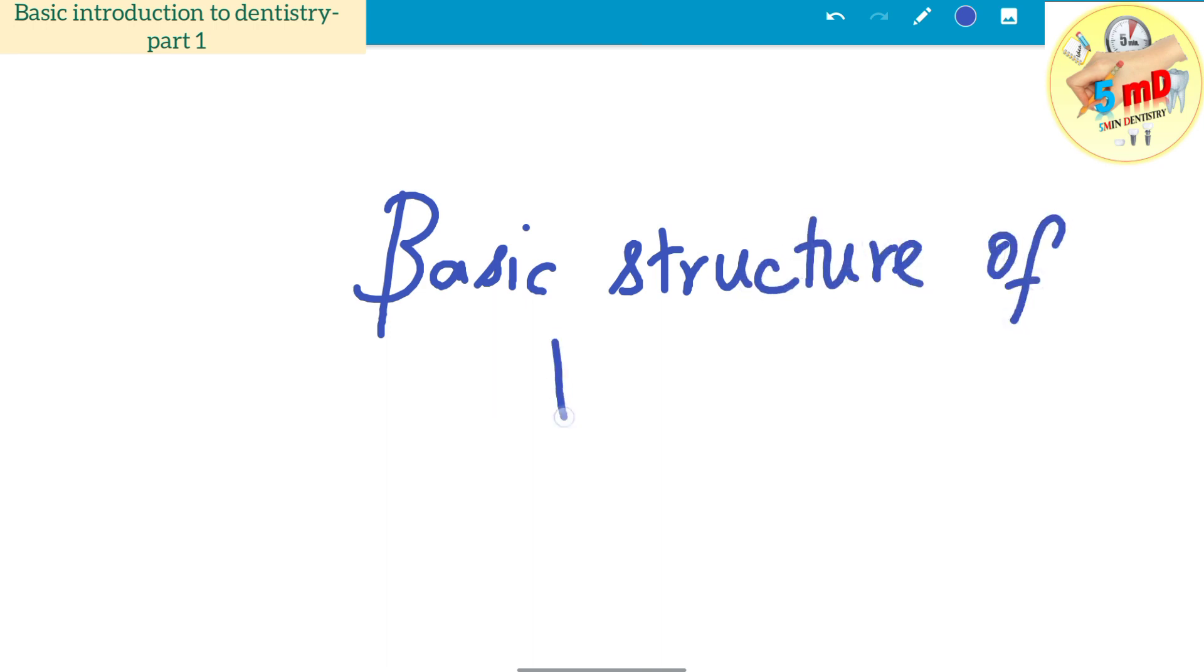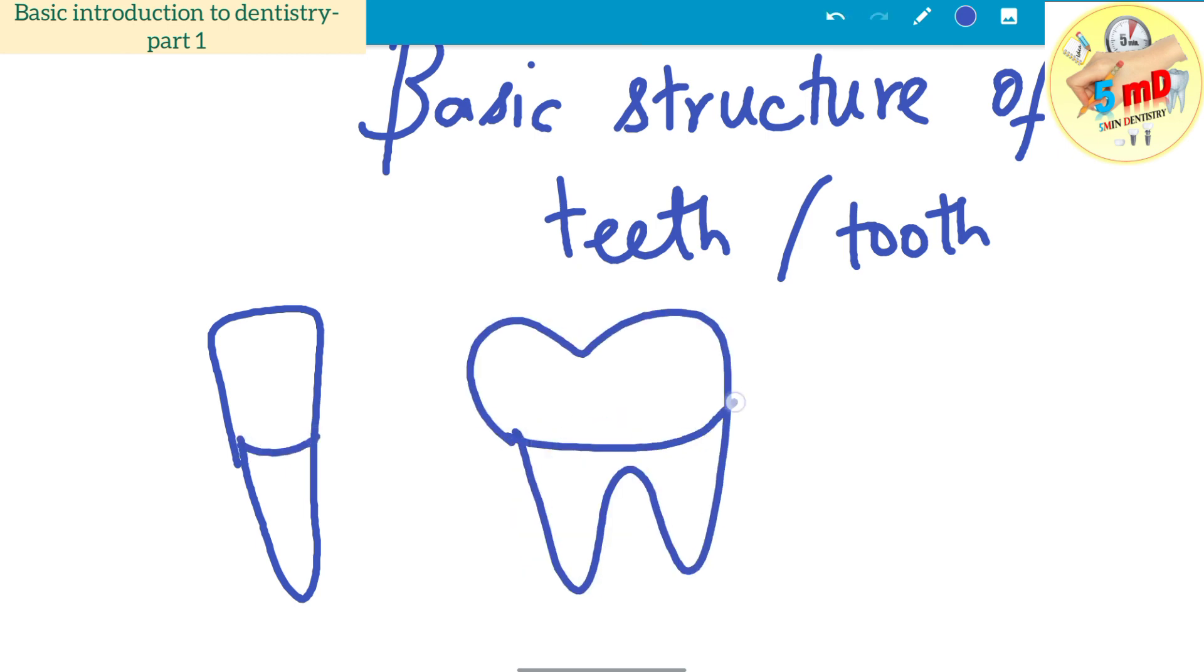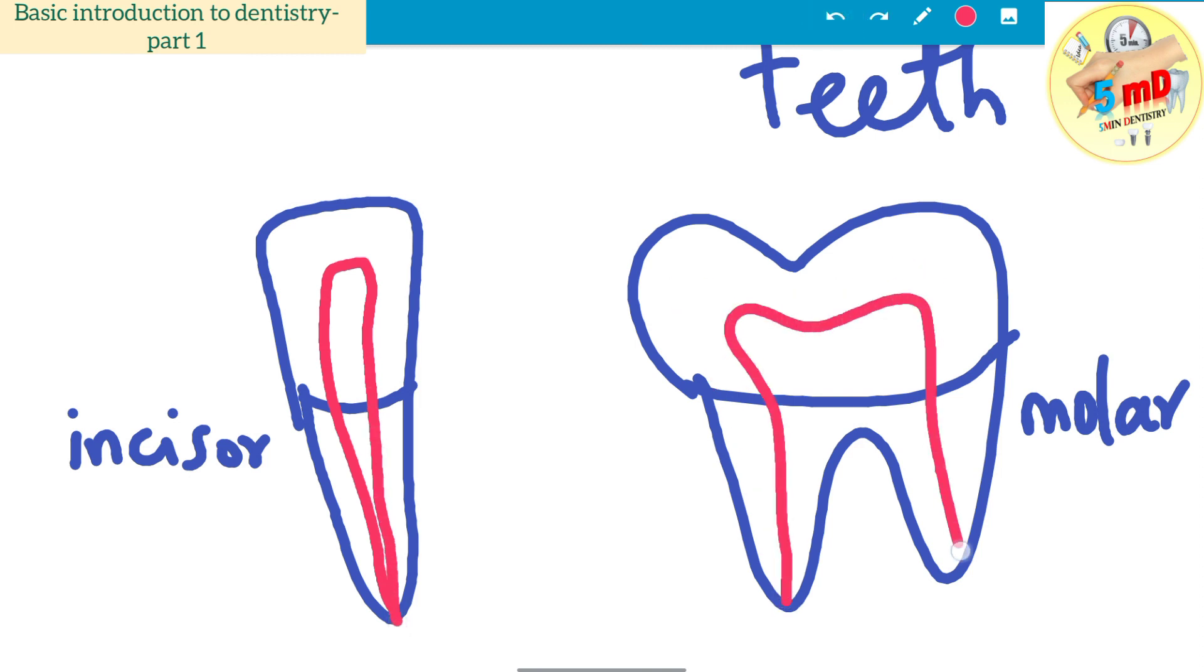This is a rough structure of an incisor and molar for your understanding. The innermost core is called the pulp. The pulp is the most vital structure because it has blood supply and nerve supply of the tooth. This part forms the pulp, the innermost core.